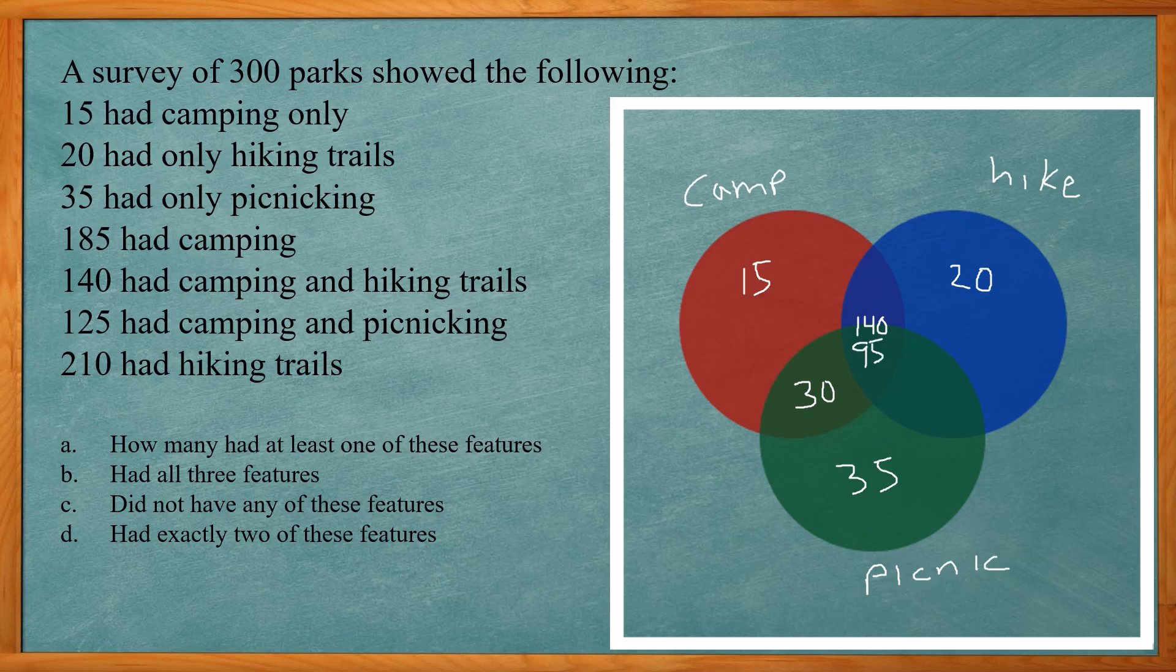Okay so that's gonna be 95 of the 140 so that leaves 45 that must be here. Okay so that total camping and hiking intersect is still 140 but now I can split it out to 95 and 45.